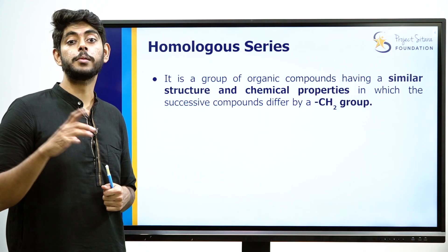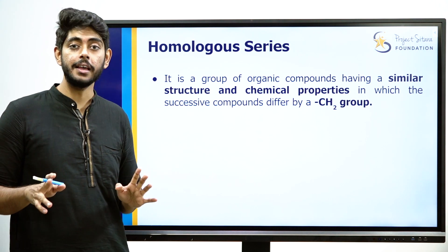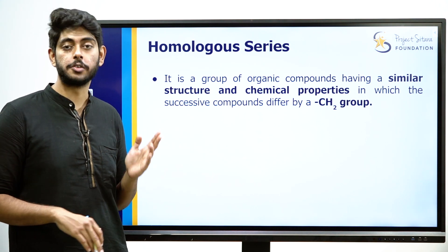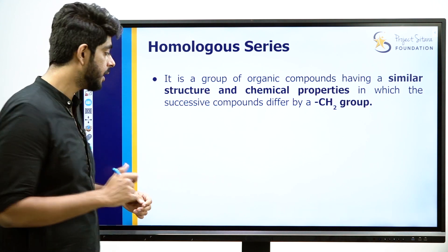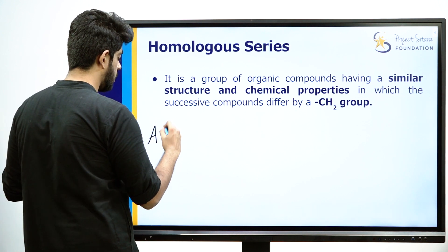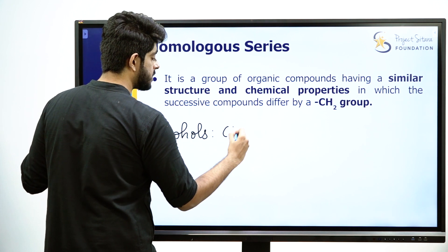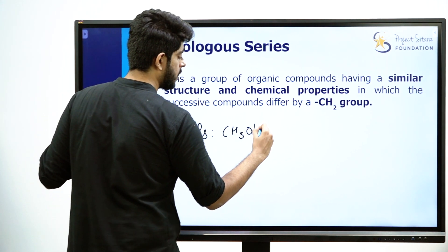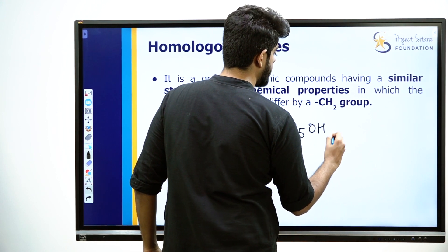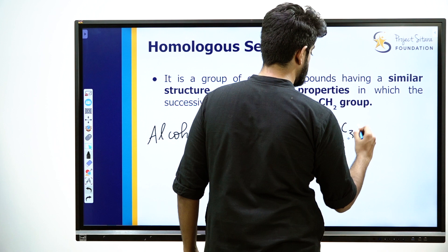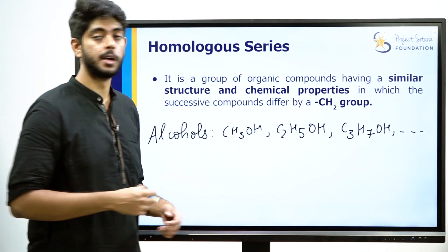So, properties of alkanes — if you know those, they are applicable to all alkynes in that series too. Now, the homologous series of alcohols: methanol CH3OH, ethanol C2H5OH, propanol C3H7OH, and so on.